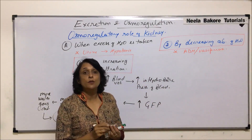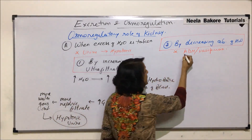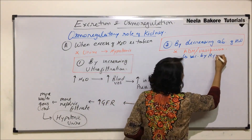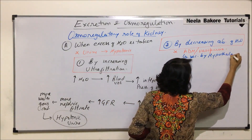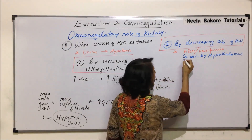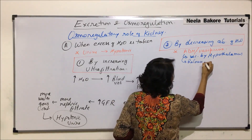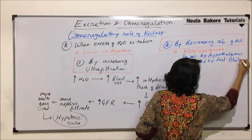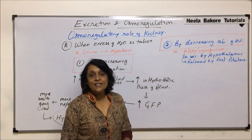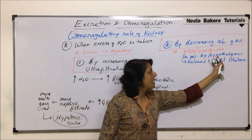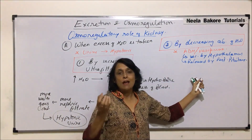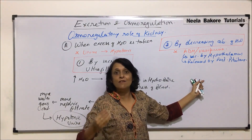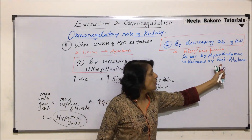One important thing to remember about ADH is that it is secreted by the hypothalamus and released by the posterior lobe of the pituitary. The difference is: hormone production takes place in the hypothalamus; after production, it is transported and stored in the posterior lobe of the pituitary, and whenever required, it is released from there.